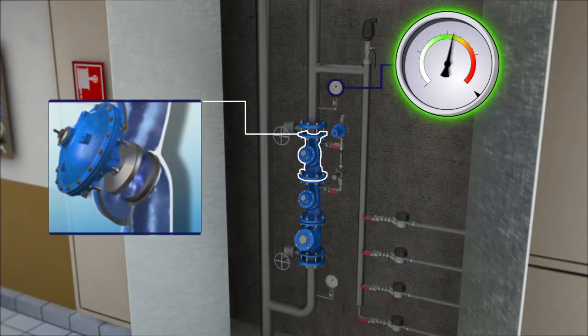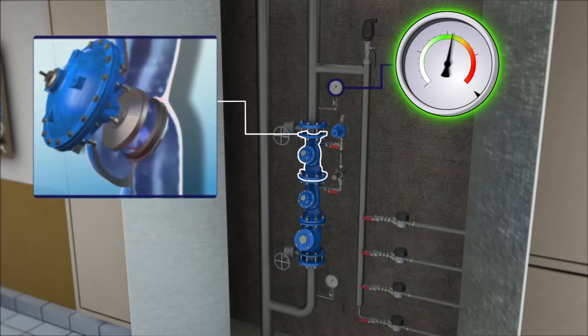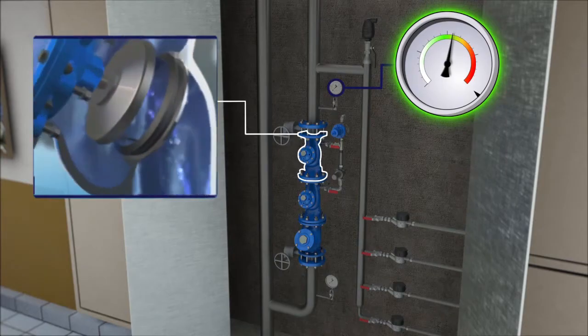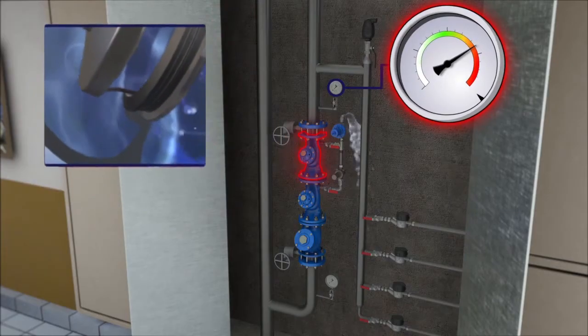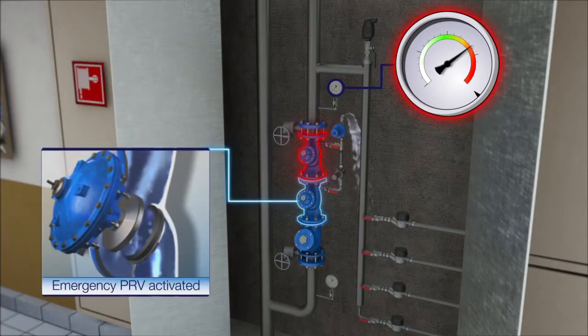In case of a malfunction, by foreign object for example, the downstream pressure excessively rises. The emergency pressure relief valve opens its vent port, but this cannot solve the problem.